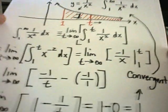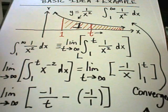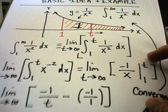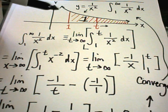If you end up getting either positive or negative infinity out of your limit, then we call the original integral divergent. So this is the basic idea with an improper integral.